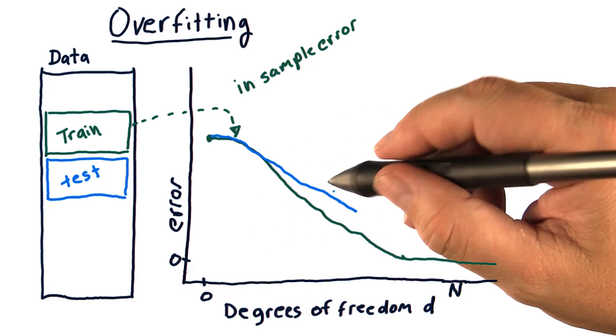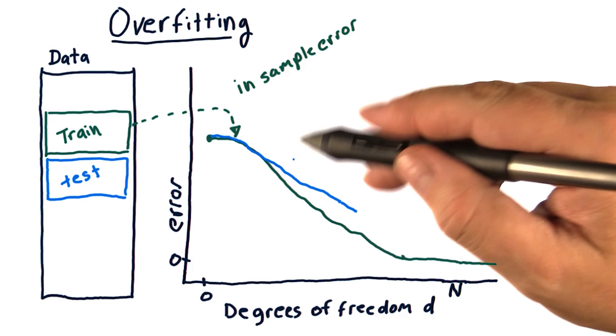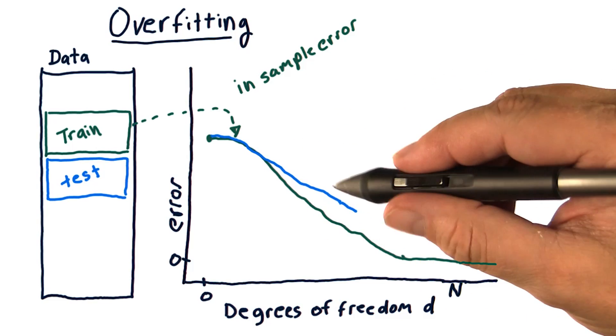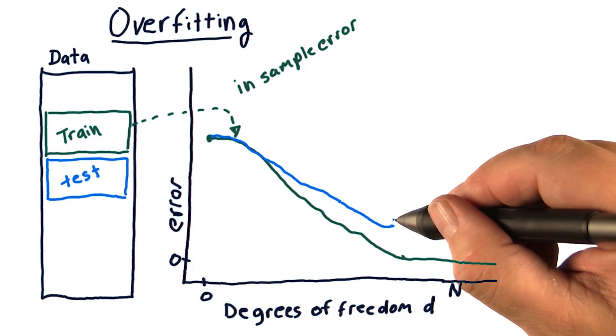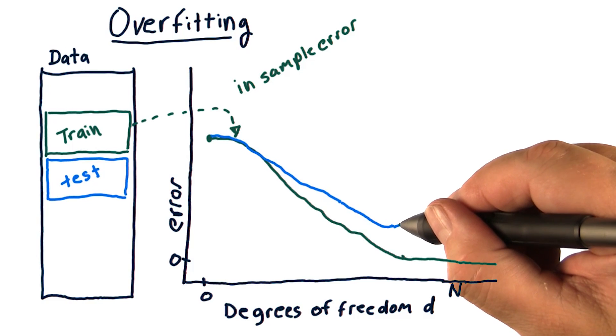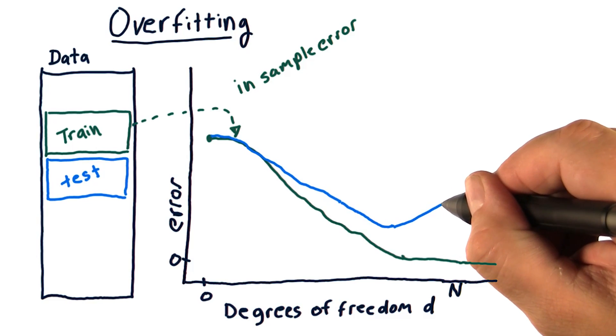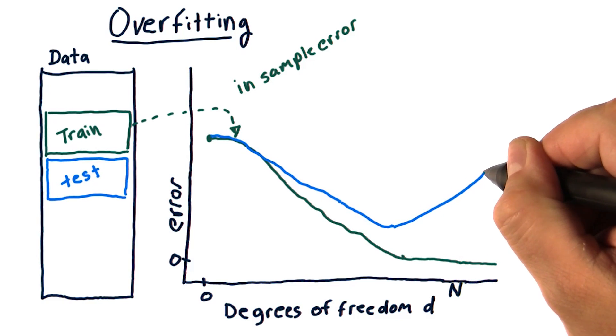Now in this region, both our in sample and out of sample errors are still decreasing. But eventually, we'll reach a point where our out of sample error begins to increase. In fact, it may increase strongly.